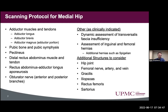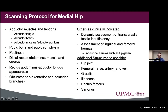This is the scanning protocol we were referring to, which comes largely from the AMSSM fellowship guidelines for ultrasound. The first column includes adductor muscles and tendons, pubic bone and symphysis, pectineus, distal rectus abdominis muscle and tendon, rectus abdominis–adductor longus aponeurosis, and obturator nerves. Clinically indicated additions include transversalis fascia insufficiency and assessment of inguinal and femoral hernias, as well as spigelian hernias. Additional structures to consider include the hip joint, femoral nerve, artery, and vein, and depending on suspicion, gracilis, iliopsoas, rectus femoris, and sartorius.